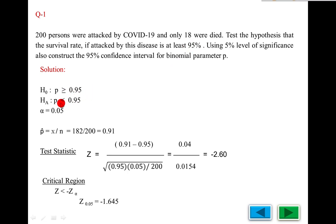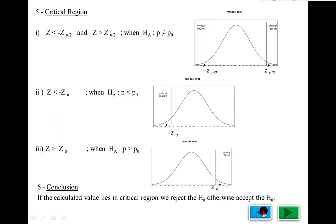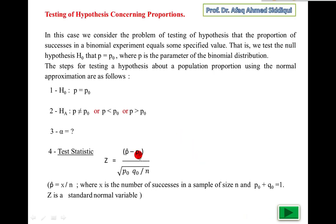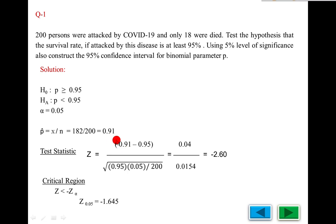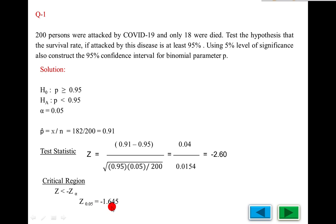H₀: p equals 0.95, meaning at least 95 percent. The alternate is not explicitly given, so the parallel setup gives the alternate as p less than p₀. Alpha equals 5 percent, the given level of significance. Substituting into the test statistic formula: z equals p-hat minus p₀ over square root of p₀ q₀ over n. p-hat equals 0.91, p₀ equals 0.95, q₀ equals 1 minus 0.95 equals 0.05, n equals 200. Simplifying gives z equals minus 2.60.